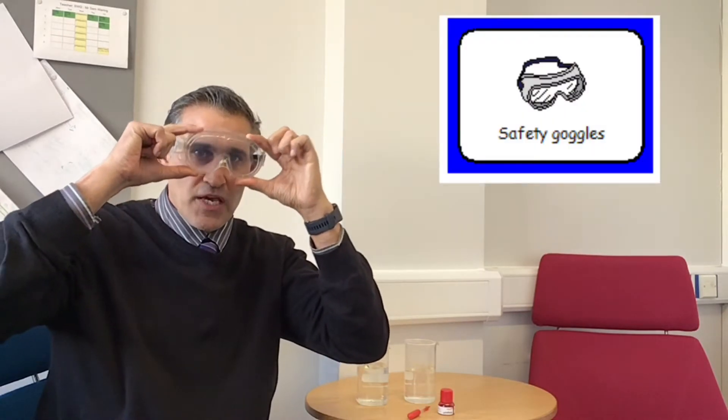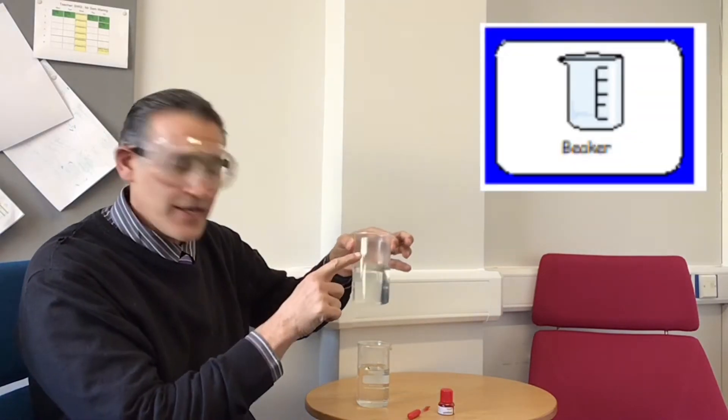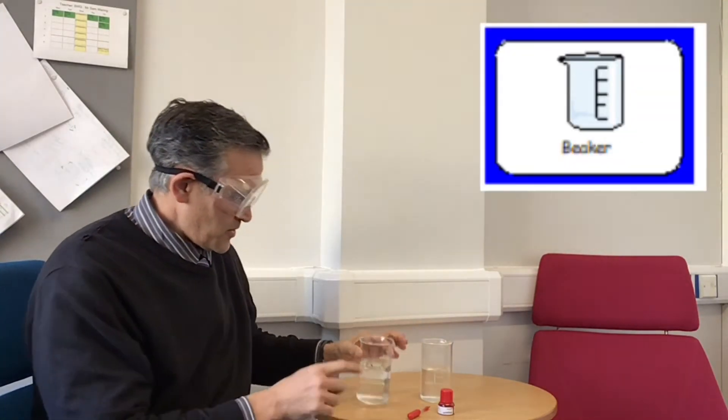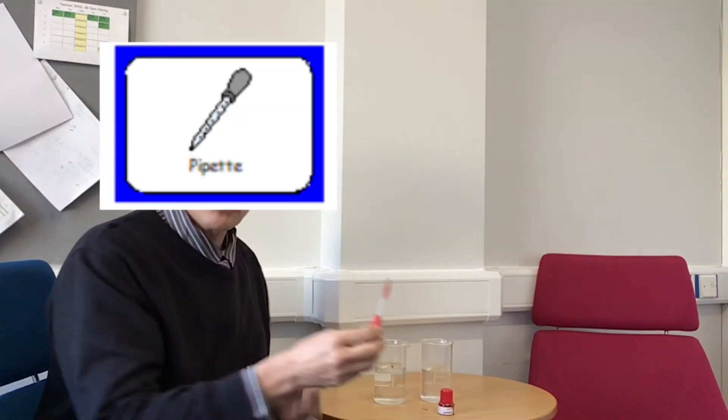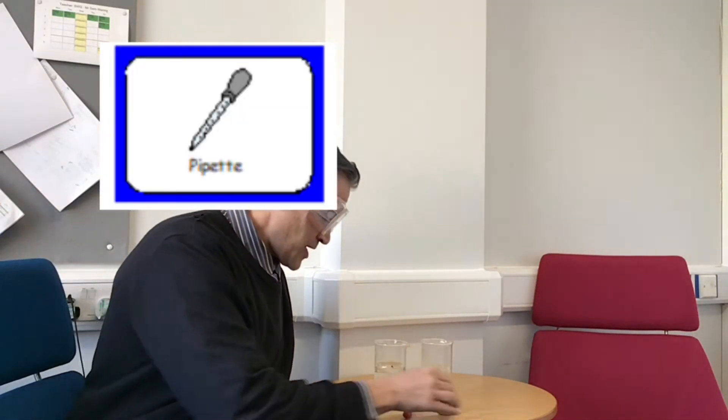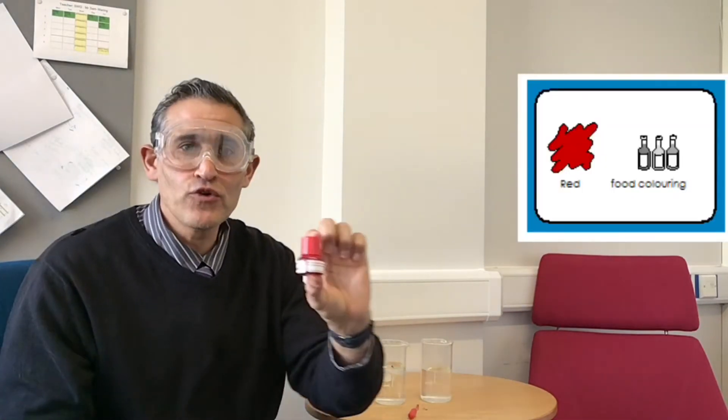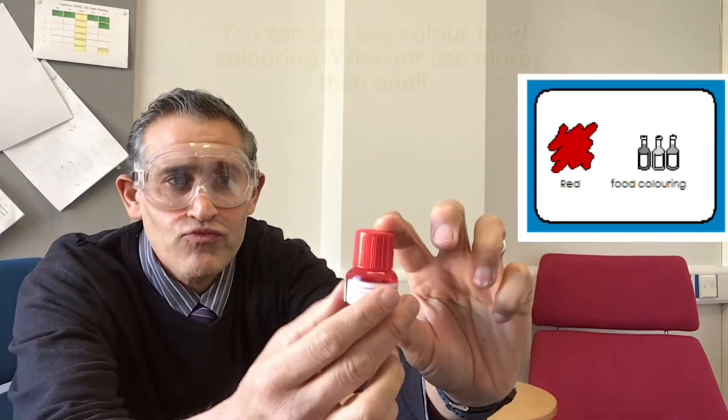Hello BKTville, Mr. Shaw here again for another science experiment. I've got my safety specs on to protect my eyes. For this experiment I have two beakers, a dropping pipette, and some red food coloring. You can use any food coloring you like.